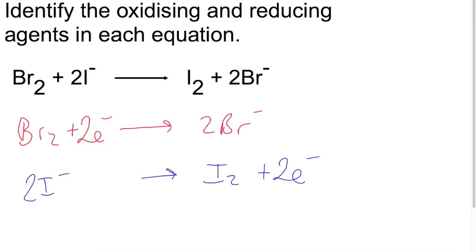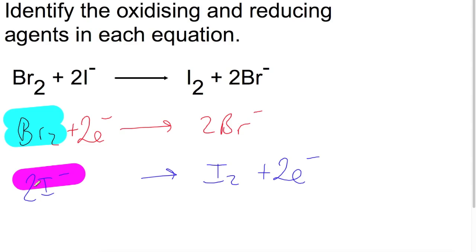Looking for our oxidising and reducing agents: the oxidising agent is the one which gets reduced, so that is the bromine. The reducing agent is the one which gets oxidised — that is the iodide. Looking at the electrochemical series, iodide is higher up than bromine, which is why the iodide equation gets flipped over.